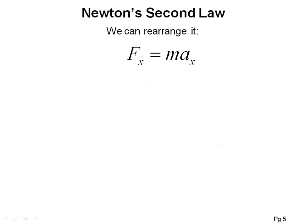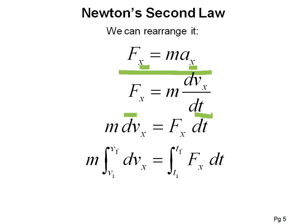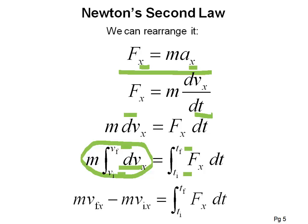Let's start with Newton's second law and rearrange it a little bit. We know that acceleration is the first derivative of velocity, so in the x direction: a_x = dv_x/dt. If I multiply both sides by dt, I get m·dv_x = F_x·dt. Whenever you have these differential elements on either side, you can integrate — from t_initial to t_final and from v_initial to v_final. Integrating the left side gives us the change in momentum.